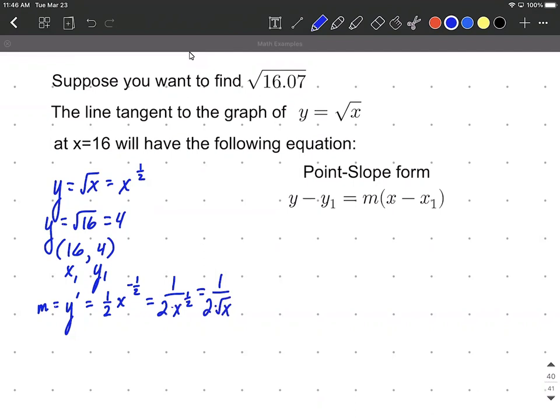Now we still need to get that slope, so we need to evaluate this derivative at our x value of 16. So I'm going to substitute 16 in for our x value and reduce down here. The square root of 16 is going to be 4, so we have 1 over 2 times 4, which is going to be one-eighth.